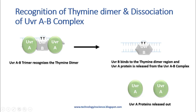When a lesion is present, the complex stalls at that region. UVRB stays there while UVRA is released from the trimer. The role of UVRA is to load UVRB onto the particular lesion region. Once the region is identified, UVRA is released from the complex. This loading of UVRB into the lesion region is achieved through the utilization of energy from ATP.